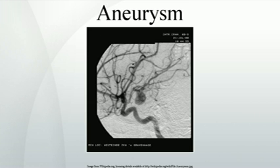Diagnosis of a ruptured cerebral aneurysm is commonly made by finding signs of subarachnoid haemorrhage on a computed tomography scan. If the CT scan is negative but a ruptured aneurysm is still suspected based on clinical findings, a lumbar puncture can be performed to detect blood in the cerebrospinal fluid. Computed tomography angiography is an alternative to traditional angiography and can be performed without arterial catheterization. This test combines a regular CT scan with a contrast dye injected into a vein, which travels to the cerebral arteries to create images showing how blood flows into the brain arteries.